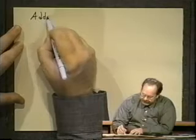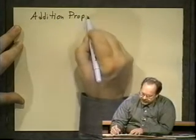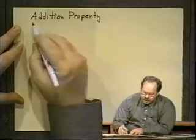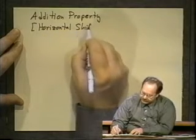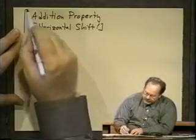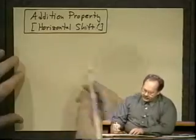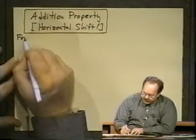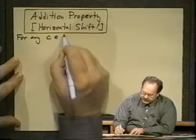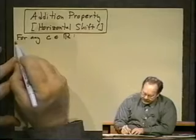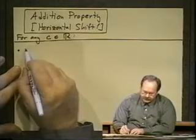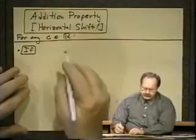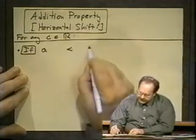Okay, now let's look at one you might call the addition property, but I have another name for it here. You might call this simply a horizontal shift. That's something we've studied. Here's what's going on. Let's just say for any real numbers c, the following holds. First time it will be for less than, of course the second one will be for greater than. If a is less than b, then take that real number, that arbitrary real number, add it to both sides: a plus c is less than b plus c.